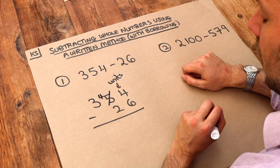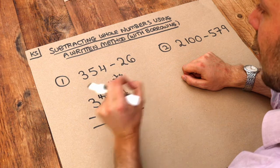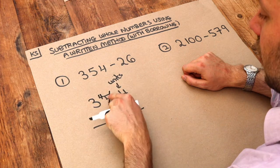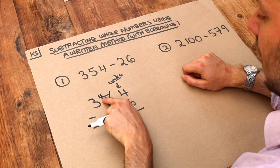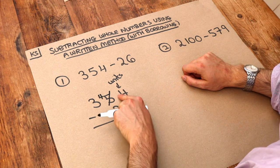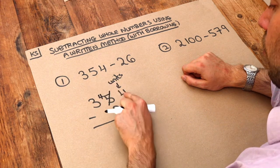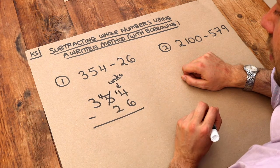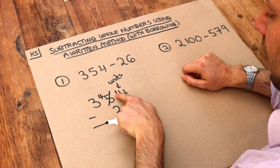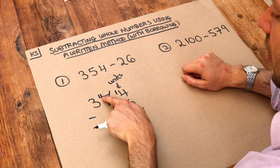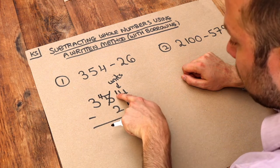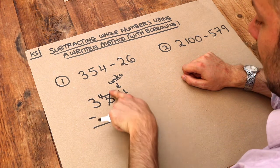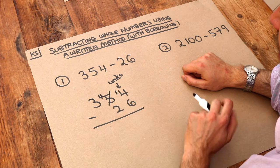That gives us an extra 10 to the right. We've borrowed a 10 from here which means we've got an extra 10 here, so if 4 goes up by 10 it's now 14. To repeat, we cross out the number to the left, reduce it by 1, and then we can put a little 1 here. So now we've got 14 minus 6 which we can do.